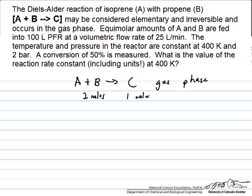We're going to have a decrease in the number of moles, and that's going to affect the volumetric flow rate as we go down the reactor and convert reactants to products.